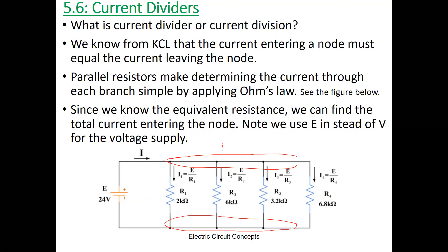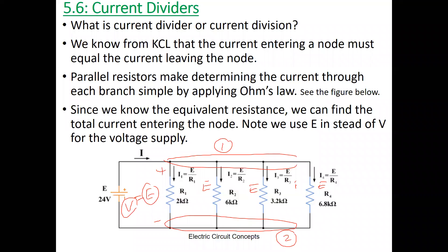So this is node 1 and this is node 2. The voltage across them is E or V — some books use E, some use V, so in this course I sometimes use both. The parallel resistors make determining the current through each branch simple by applying Ohm's law.